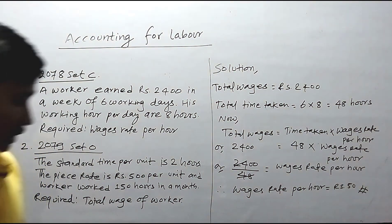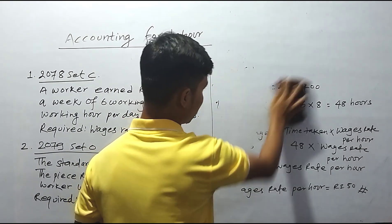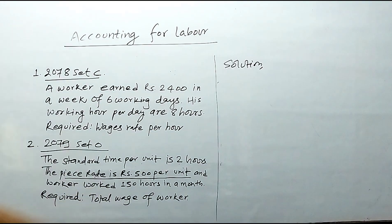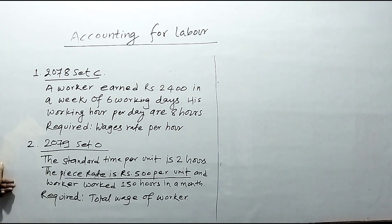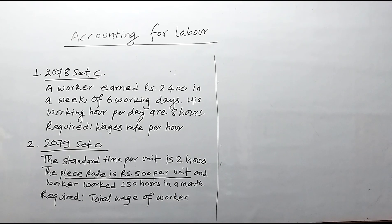Now for the piece rate example. The time per unit is 2 hours. The piece rate is rupees 500 per unit — 50 per unit — and the worker works 150 hours in a month. We need to find the total wages of the worker.